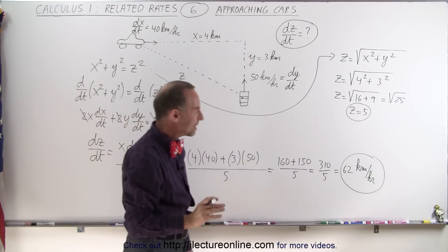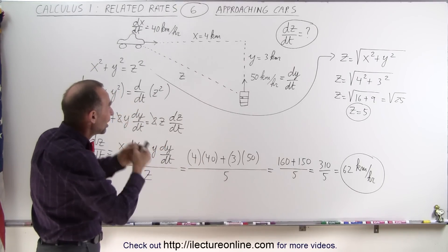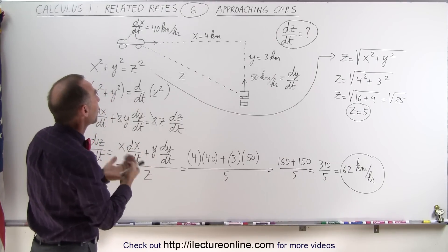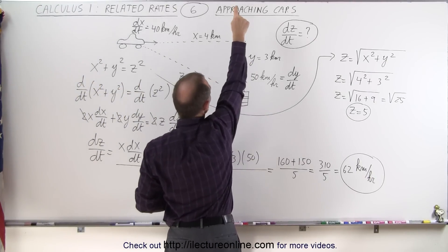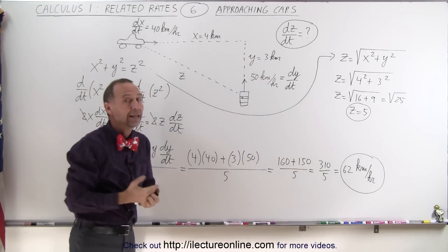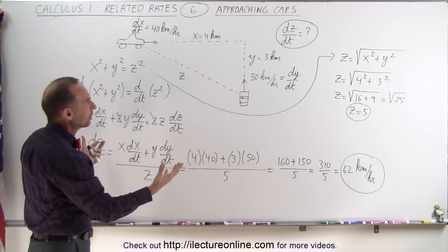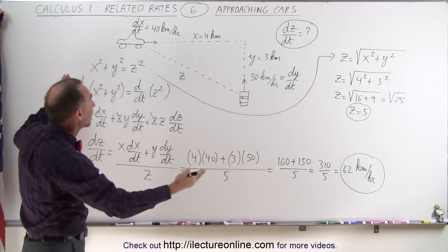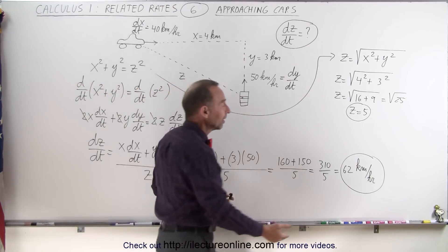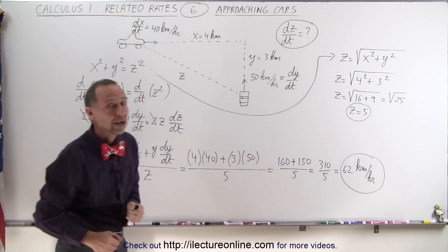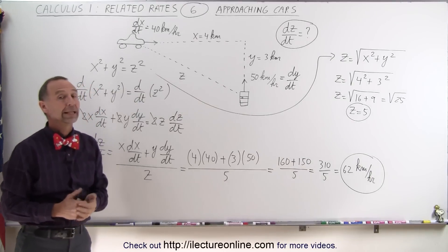Notice that we ended up with a positive value. We know that they're approaching one another, so the change in z is actually negative. But we end up with a positive value. If we had turned the problem around and made the car go the other way, we would have ended up with a negative dy/dt and therefore a negative dz/dt. It really depends how the problem is drawn. The negative can simply be deduced from the fact that the distance is diminishing, so dz/dt should be a negative quantity. Or you could simply state that they're approaching one another at a speed of 62 kilometers per hour — the negative sign is implied by the relationship between x, y, and z. That's how it's done.